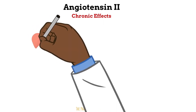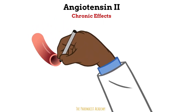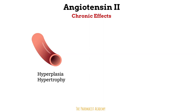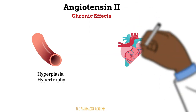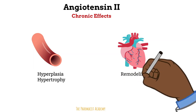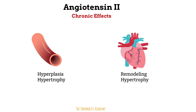So in the vessels, angiotensin 2 leads to induction of growth, cell migration, mitosis, and collagen synthesis, leading to thickening of the vascular wall. The heart has to pump through all of this resistance and tension, so over time it also leads to cardiac remodeling — which is when the heart changes in size, mass, geometry, and function.